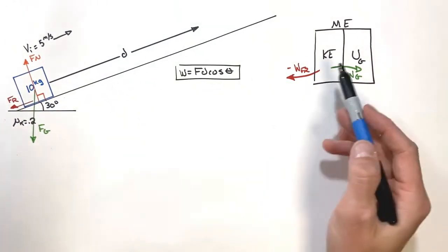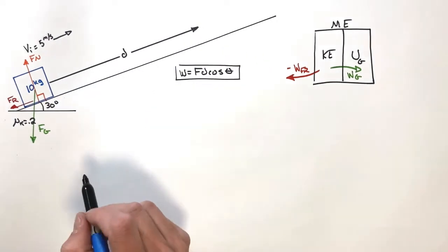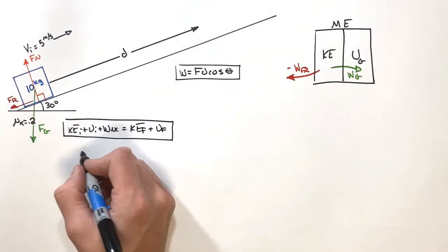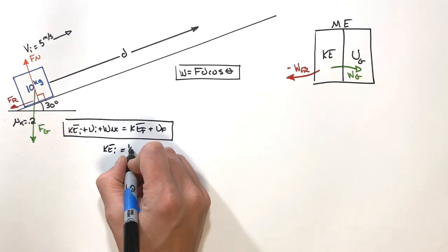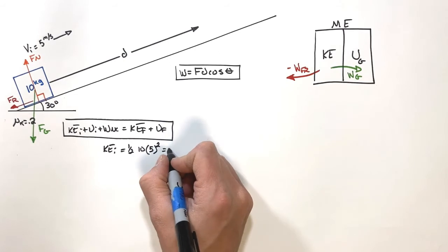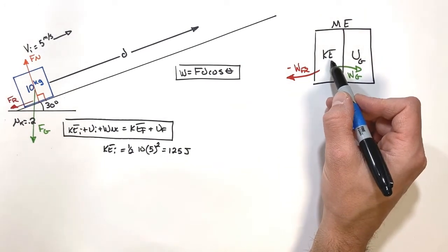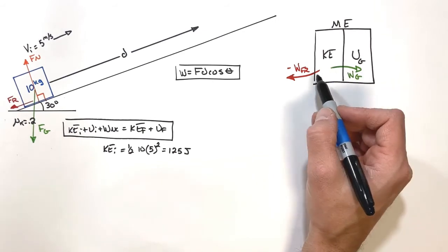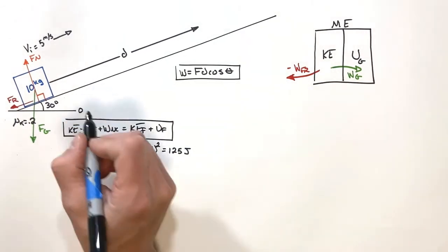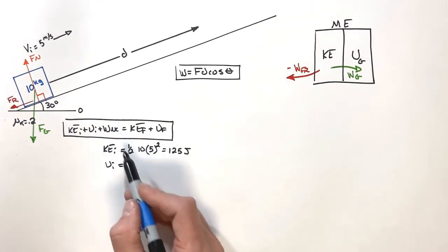Now that we've identified which forces are doing work, let's apply the work-energy theorem to solve for the actual displacement of the block. The block is initially moving, so the initial kinetic energy is one half times the mass times the initial velocity squared — that's 5 meters per second — giving us 125 joules of initial kinetic energy. That's all the energy we have to work with. For the initial potential energy, we set the initial height to zero, so initial potential energy is zero, since gravitational potential is mgh.